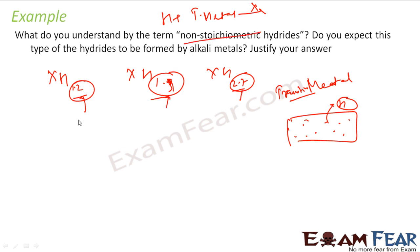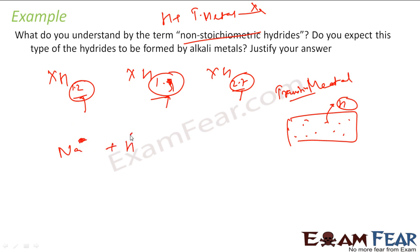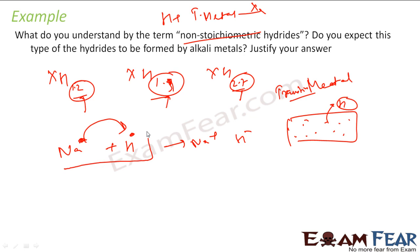When we talk about alkali metals, for example sodium — when sodium reacts with hydrogen, sodium has one extra electron and hydrogen has one deficient. So one electron gets transferred: it becomes Na⁺ and H⁻. There is a complete transfer of electrons from sodium to hydrogen, so there is no question of a few electrons or more electrons. It is always one complete transfer, so it is never non-stoichiometric.